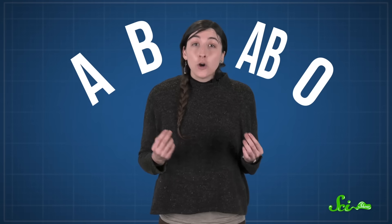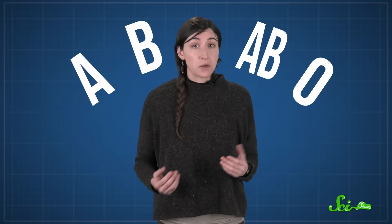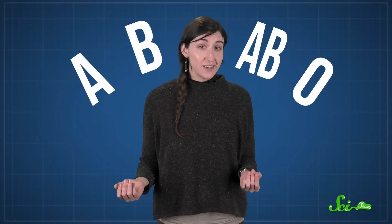But did you know that whether you're A, B, AB, or O can also put you at higher risk for things like malaria, cholera, and heart disease?